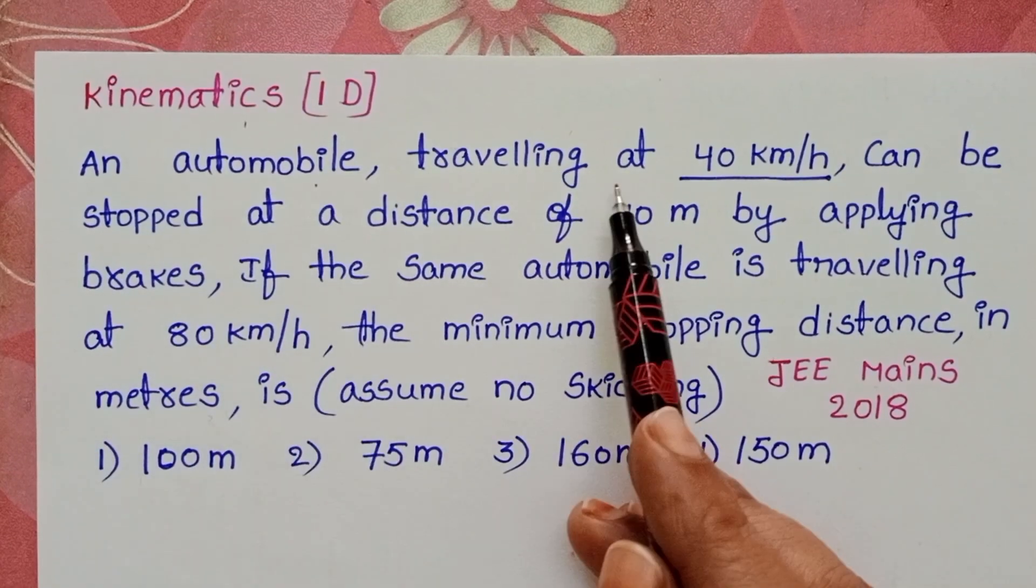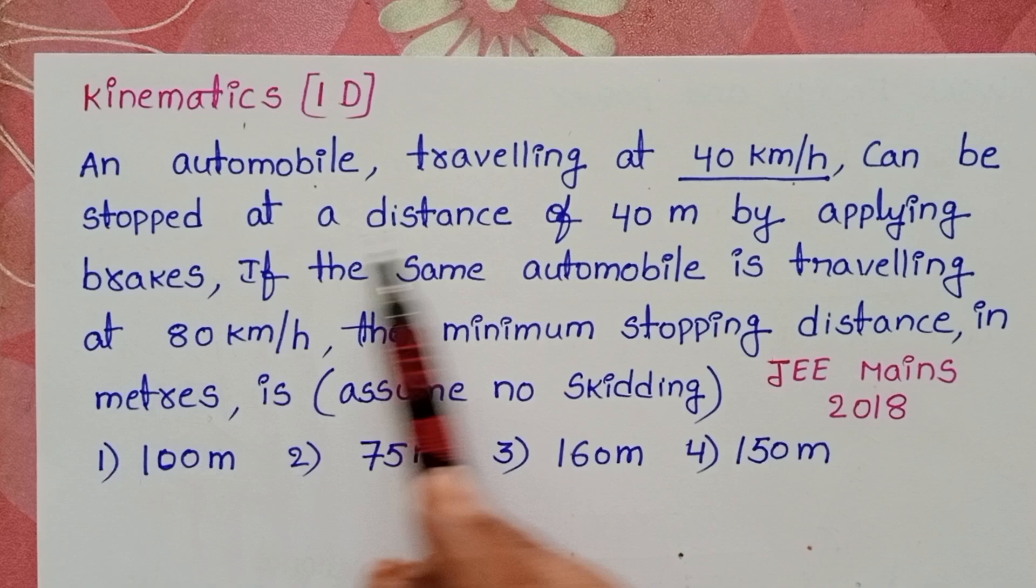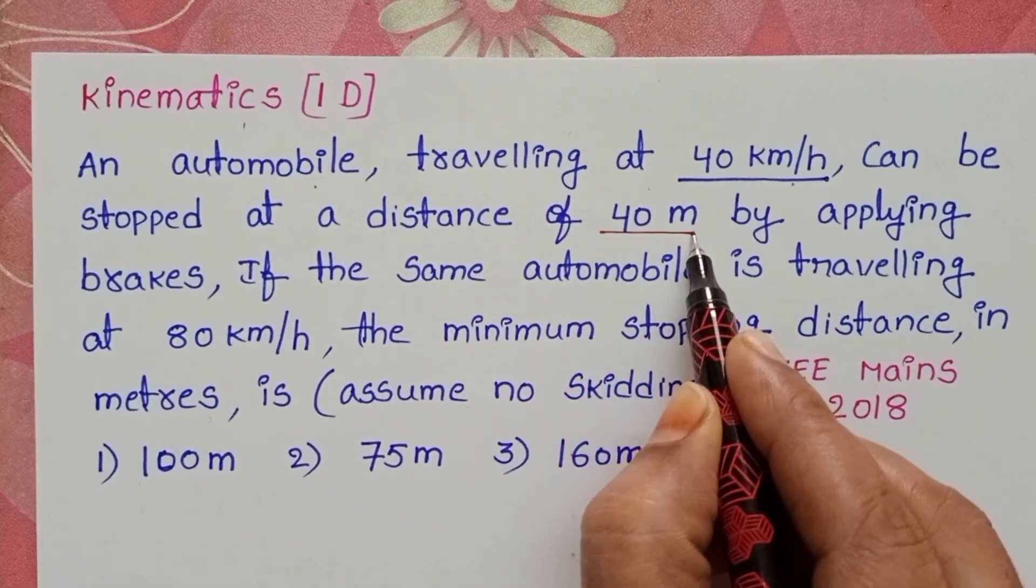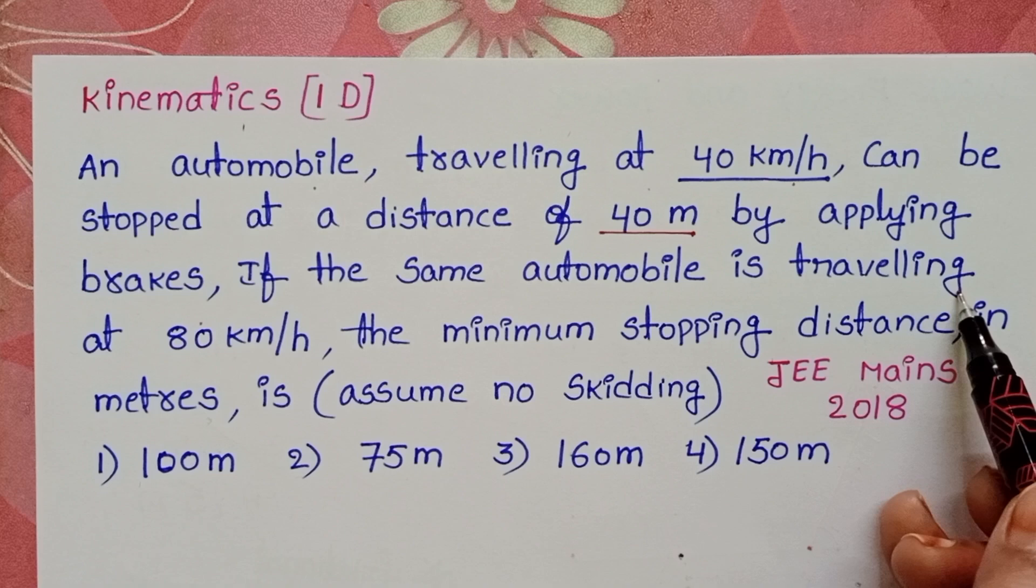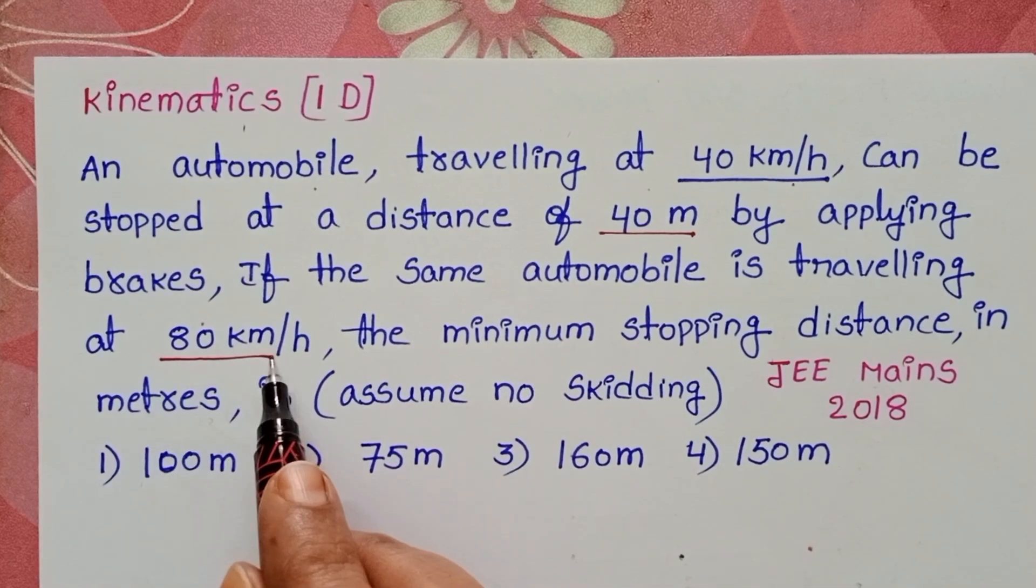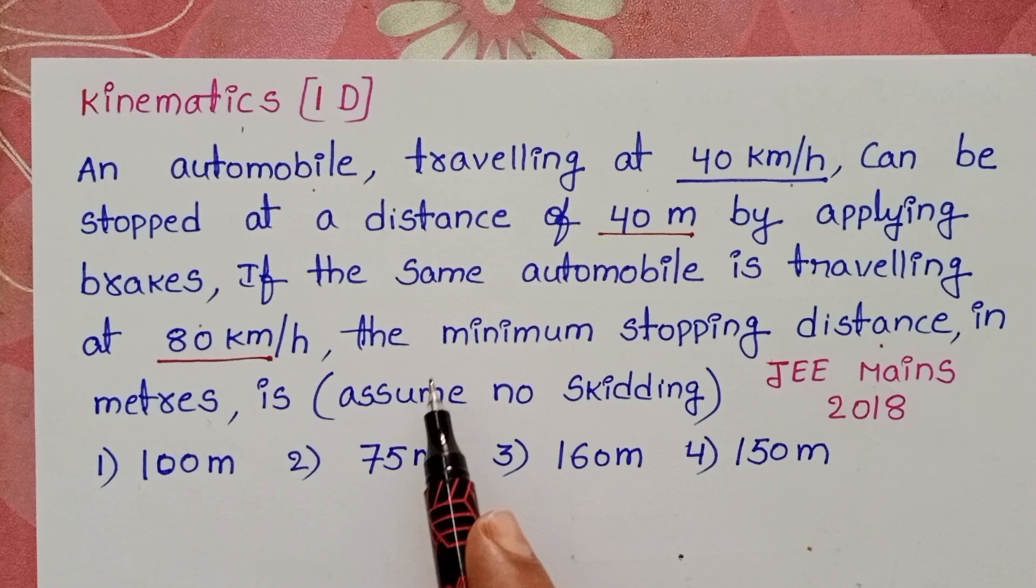An automobile traveling at 40 km per hour can be stopped at a distance of 40 meters by applying brakes. If the same automobile is traveling at 80 km per hour, the minimum stopping distance in meters is?